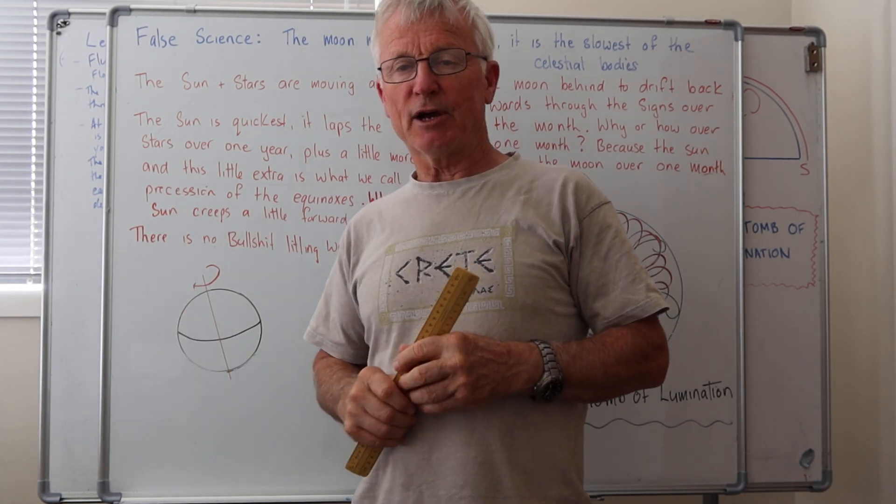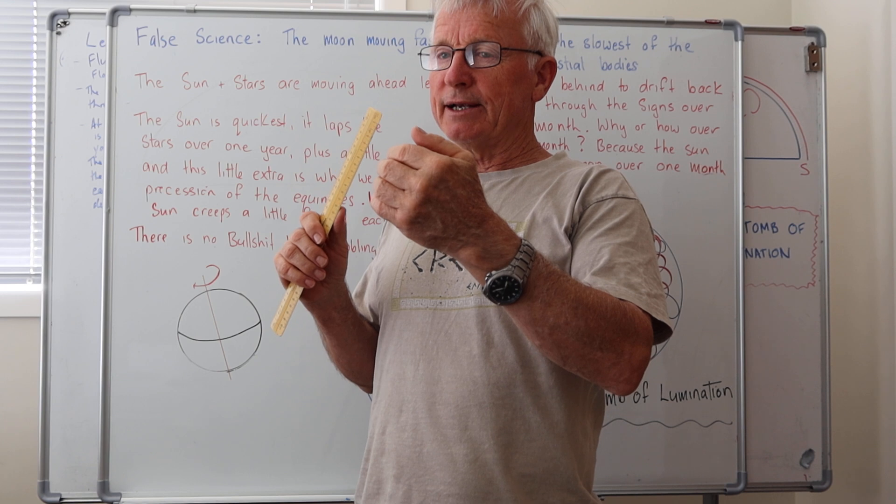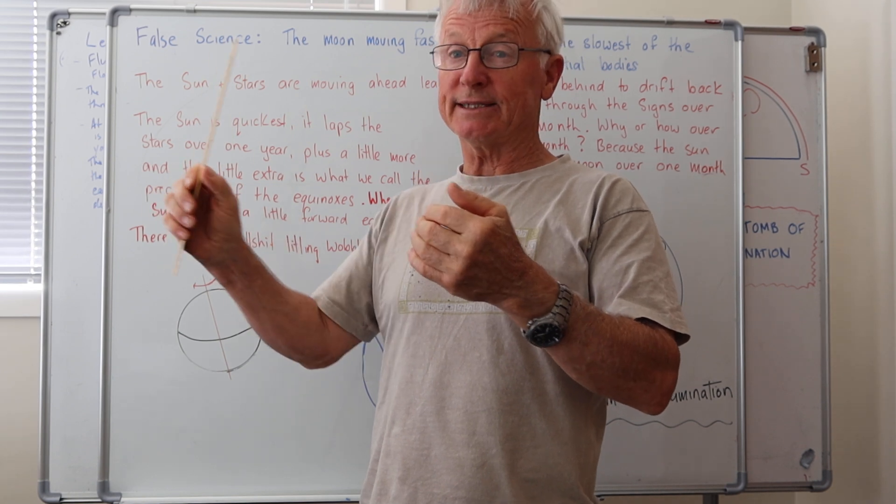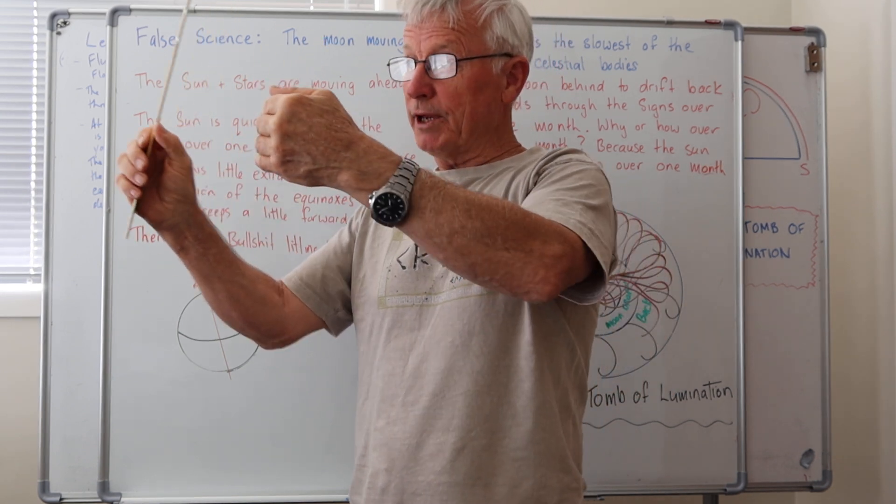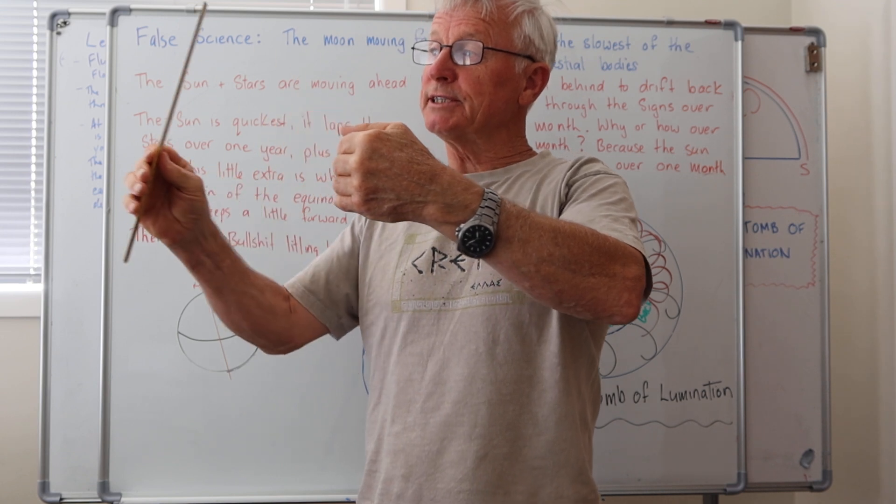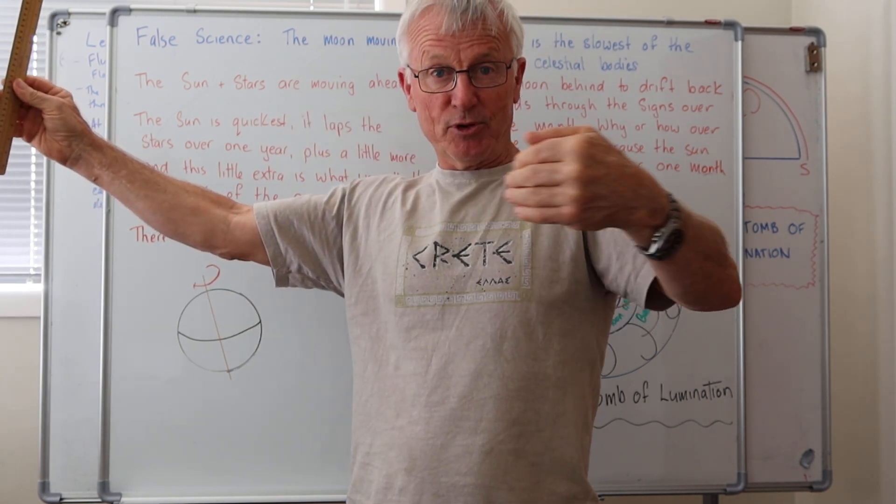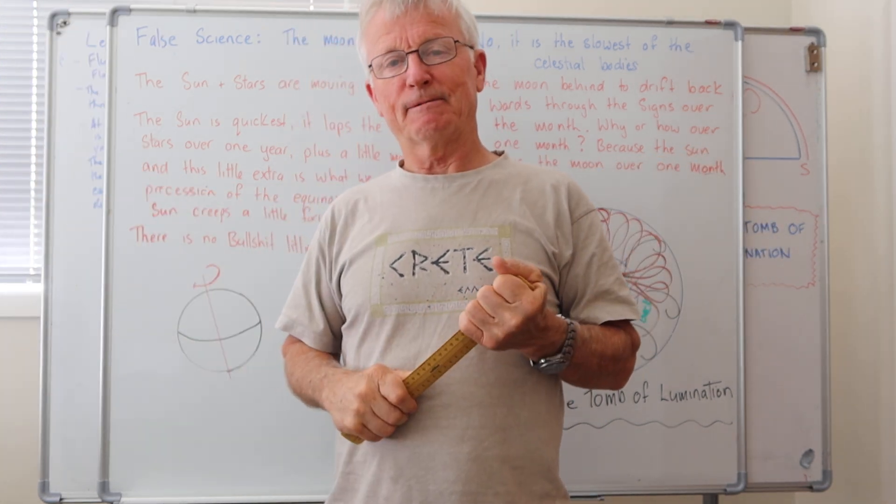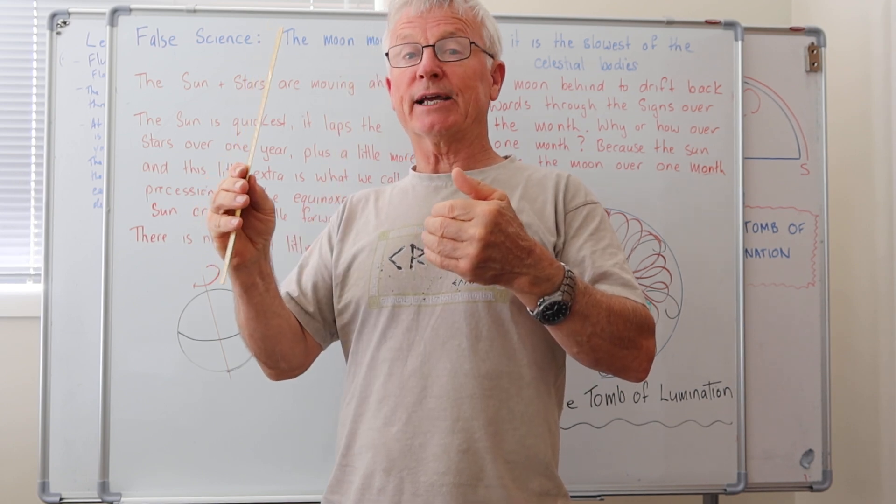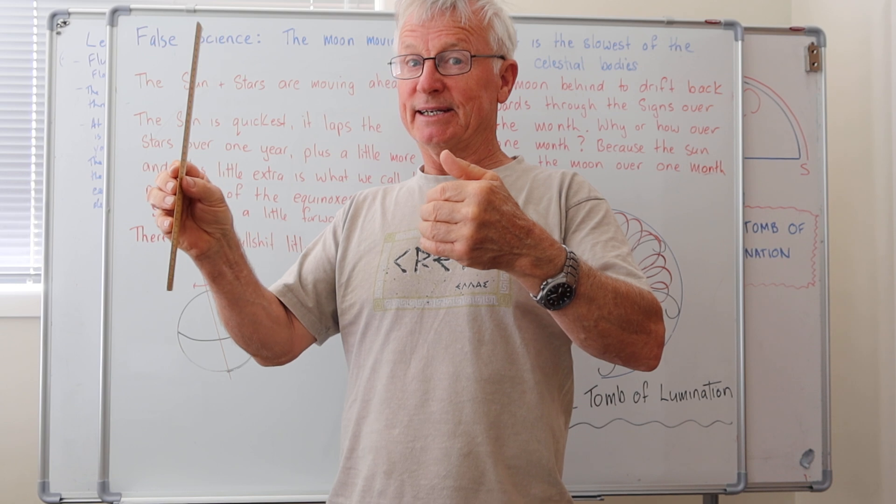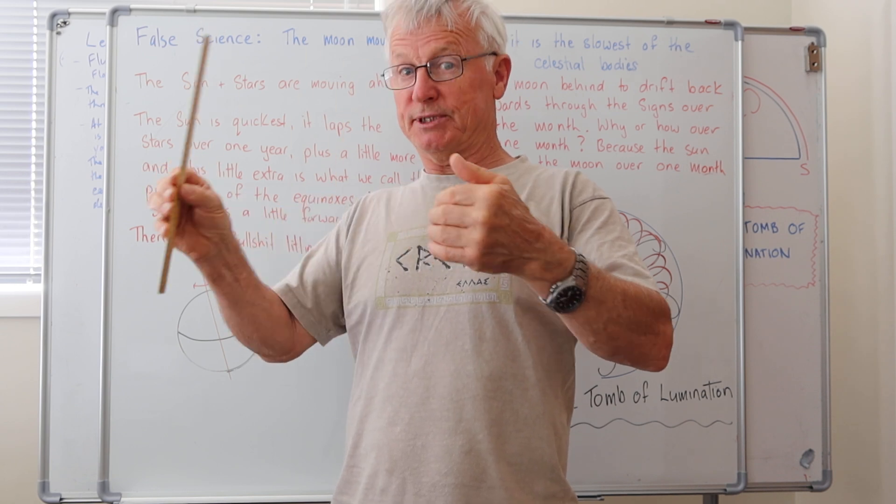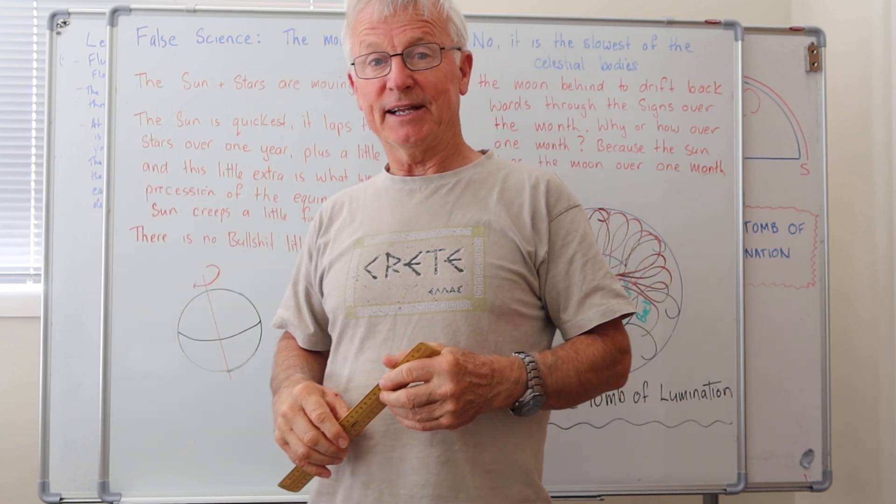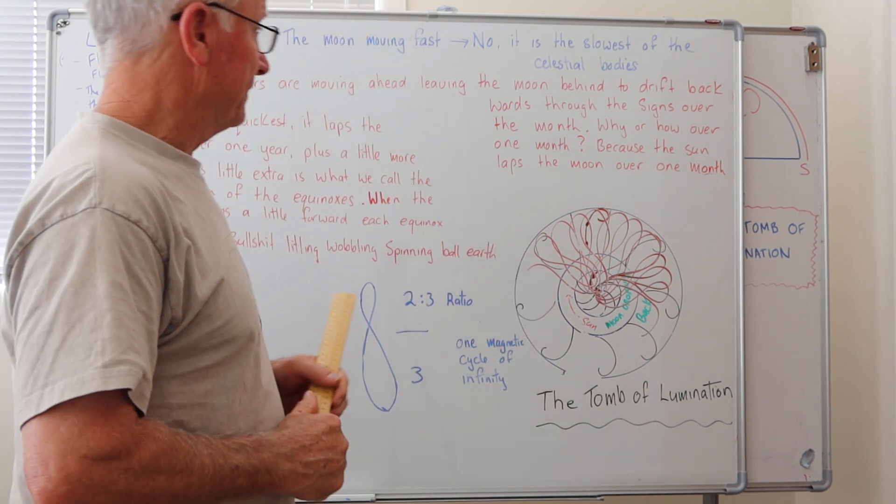What happens is over one month, the Sun does two to one with the moon. So if the Sun's raced ahead with the stars, the moon's falling back, falling through all those moving constellations that are flying ahead. So the moon ends up going through the whole set of constellations in one month. When the Sun has to take a whole year because it's flowing with the stars. But over the whole year, it lapsed the stars. So there's the two to one at the end of the year.